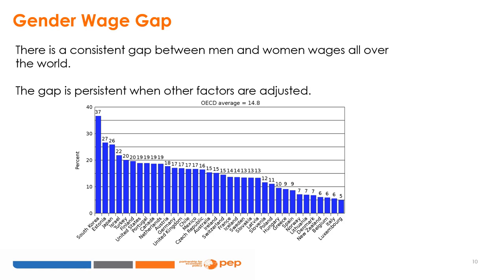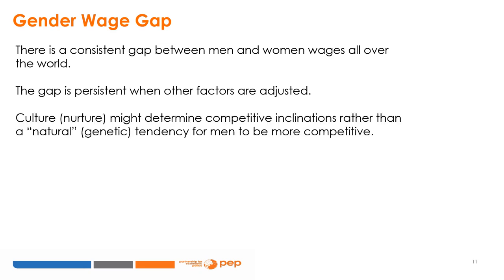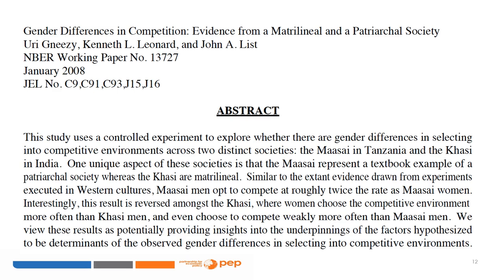Some people think that part of this gap reflects intrinsic differences in preferences. Three economists – Uri Gneezy, Kenneth Leonard, and John List – designed a behavioural experiment to explore the role of nurture on this preference gap as opposed to nature. The idea is that culture might be critically linked to competitive inclinations rather than a natural or innate tendency for men to be more competitive. Their theory is that boys are encouraged from an early age to be more competitive than girls, and this reflects on their preferences and wages in their adult lives.